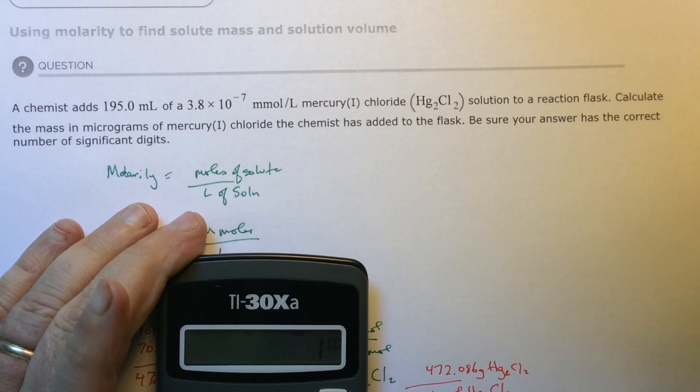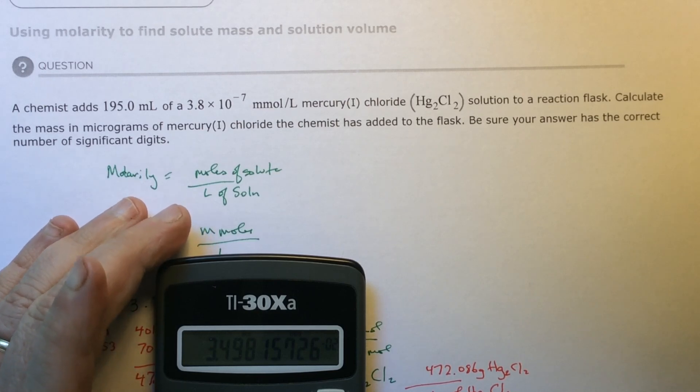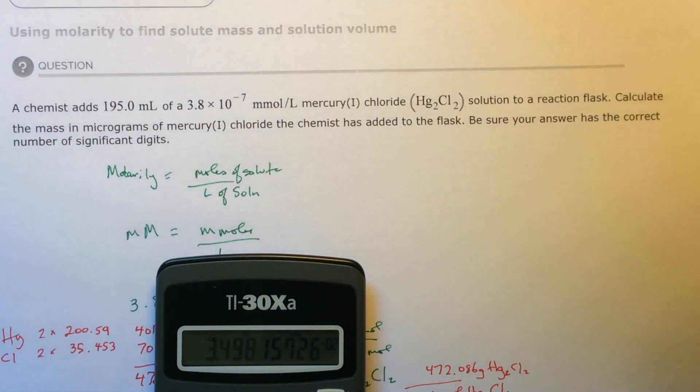So I'm going to multiply by 1 times 10 to the 6th. I've got 3.49 times 10 to the negative 2.